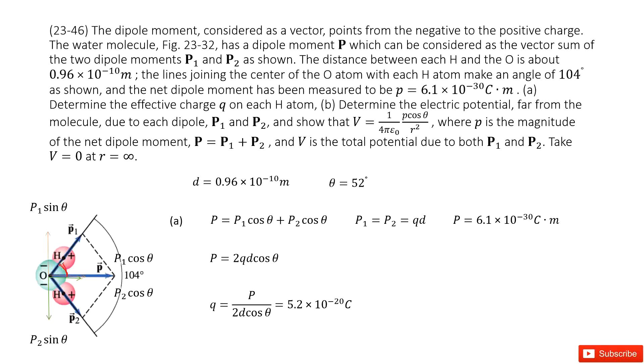So we can see, if we consider this is angle theta, the angle theta is half of the 104 degrees. So we can write the theta there. And the distance, the distance for this dipole is given, d is given.